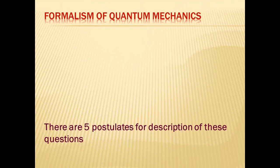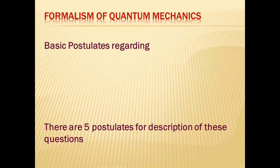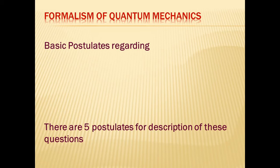The next unit is Formalism of Quantum Mechanics, where we will study the basic postulates. These postulates are based on three fundamental questions you ask when studying any mechanics. First: how do you describe the state of a system? Second: how do you calculate measurable quantities such as velocity and momentum? Third: if you know the state of a system now, what will be the state after some time — i.e., predictions based on the current state.